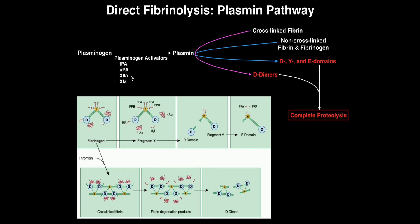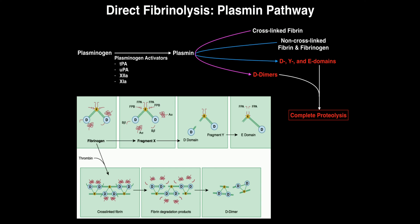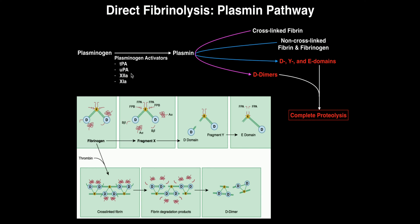If we have too much Hagemann factor (factor 12A) or factor 11A built up, these can actually start shifting the balance towards fibrinolysis by activating plasminogen into plasmin. The logic behind these clotting factor enzymes of the intrinsic pathway being able to do this is that they're a way to prevent the pathway from getting out of hand — even though they're starting the intrinsic pathway, they can also activate plasminogen into plasmin.